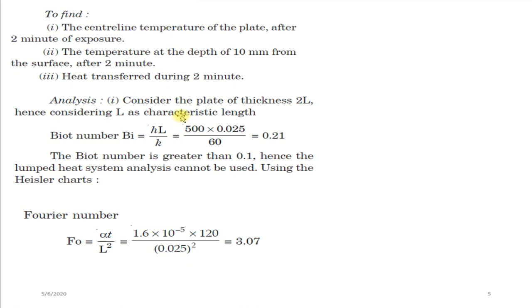We use the first graph — the temperature-time history at the mid-plane — to find the central line temperature. Calculate the Biot number: Bi = hL/K = 500 × 0.025 / 60 = 0.21. Since the Biot number is greater than 0.1, lumped capacitance analysis cannot be used, so we use Heisler charts. For the first graph we need the Biot number and Fourier number.